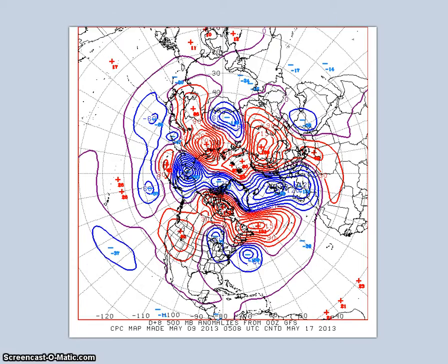Models are in agreement with the 500 millibar pattern for May 16th to the 19th. The ensembles from the 06Z GFS and the latest Canadian forecast a trough over the northeast U.S. and a ridge over the northern Rockies. The latest European ensembles forecast a less amplified flow with a weak trough near the west coast and another weak trough off the northeast coast.